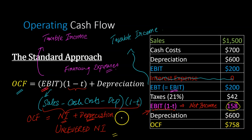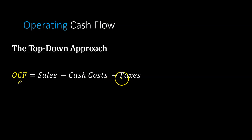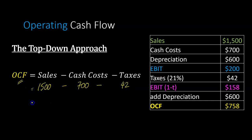There are other ways to calculate operating cash flow. One is known as the top-down approach. The top-down approach says: take your sales, subtract the cash costs — so sales bring money in, cash costs take money out — and then also subtract any money that goes out because of taxes. Using the same numbers, sales of $1,500, cash costs of $700, and taxes of $42, this math also solves to $758.